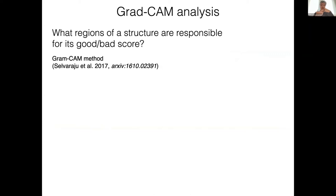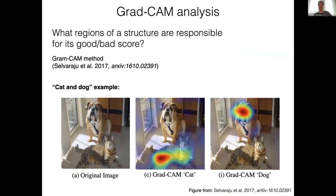What's nice about a neural net like that is that you can interrogate it using back propagation. You can ask, for instance, what regions of the structure presented to that model made it a good or bad structure according to the model. This idea comes from the field of image analysis — the Grad-CAM analysis method — which I'm illustrating using the usual cat and dog example.